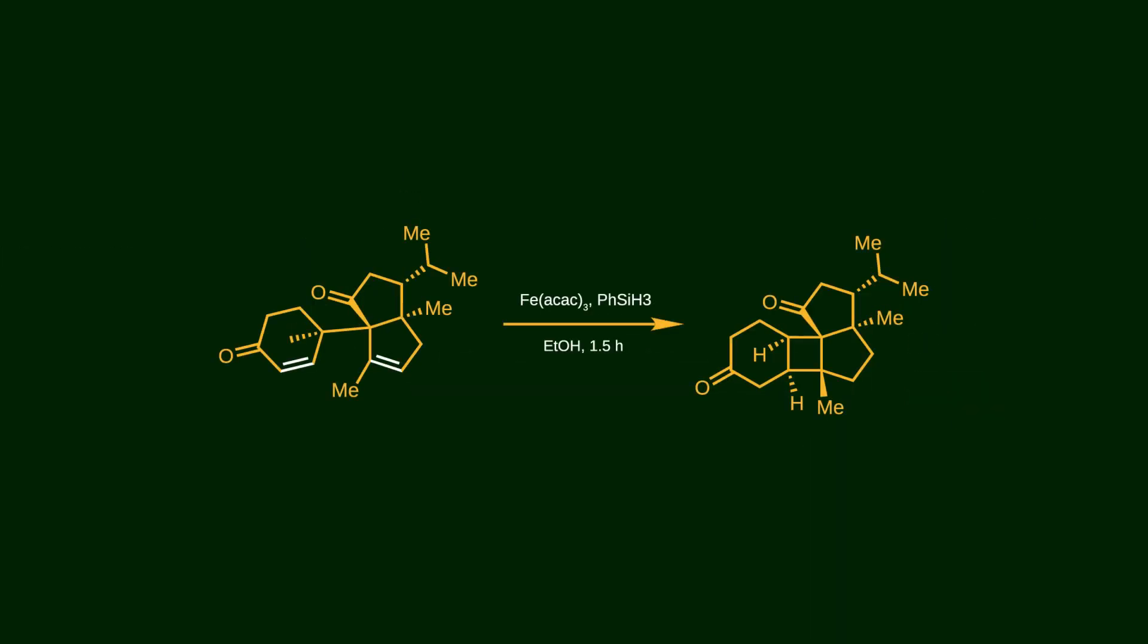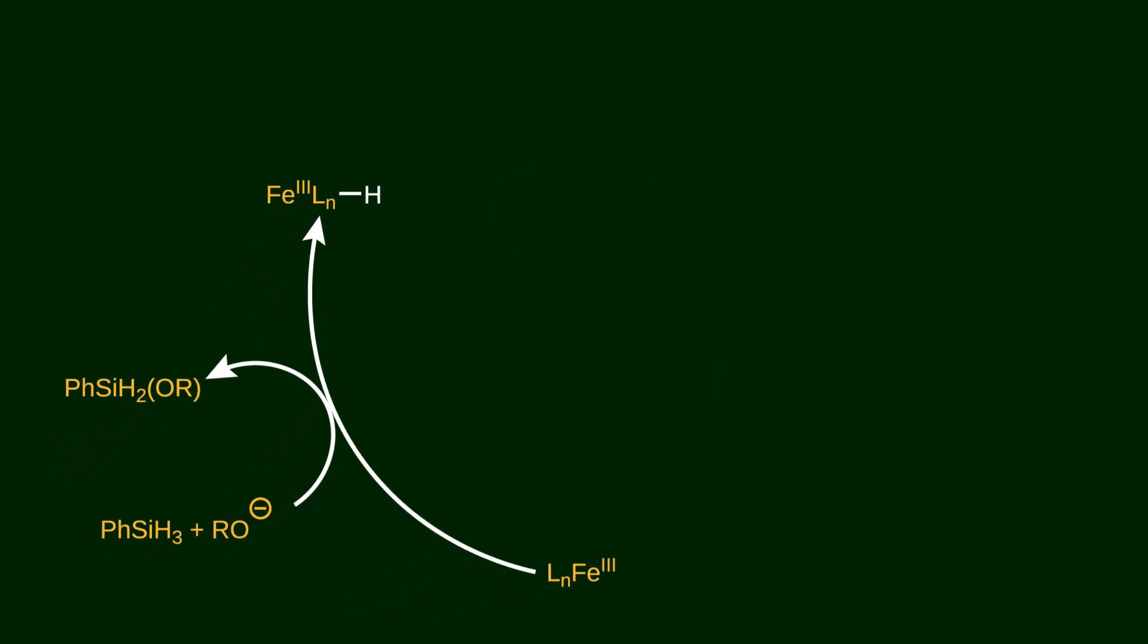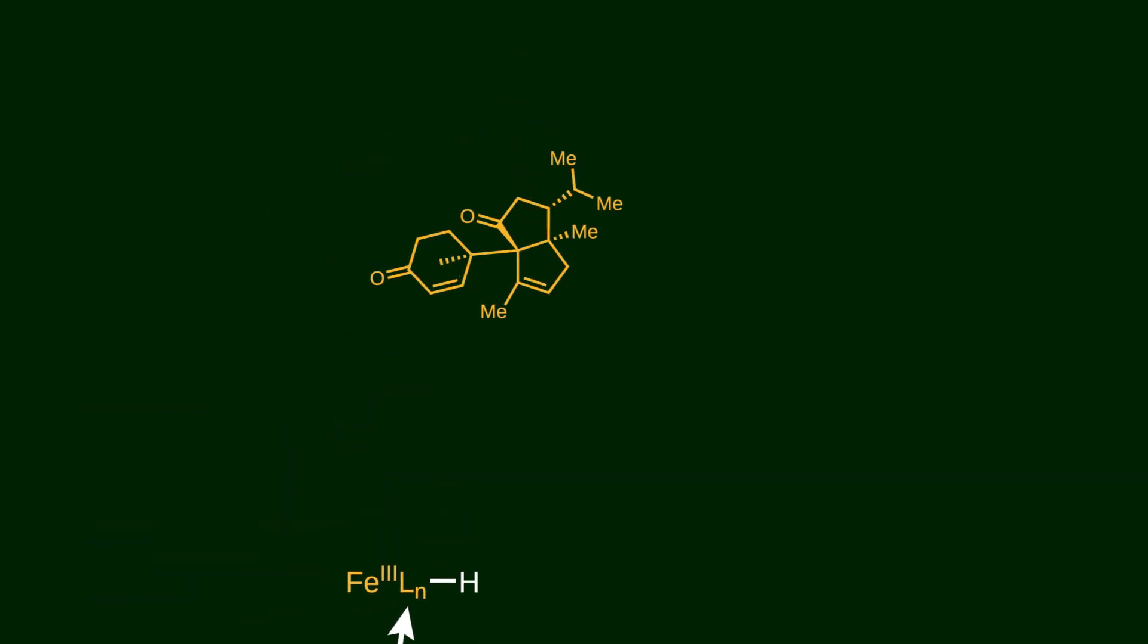Now it's time to couple the two olefins and create the central four-membered ring using the MHAT strategy. First, Fe(III) is converted to its hydride form with the help of phenylsilane, which generates a reduced Fe species. Our intermediate contains two types of olefins: one has a donor methyl group, and the other is conjugated with the ketone, so it acts as an acceptor olefin.